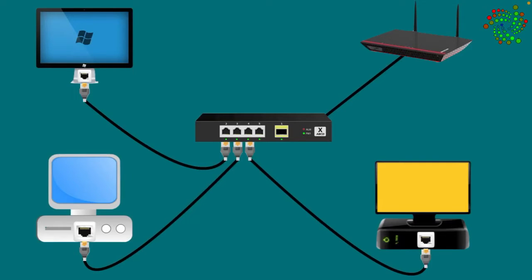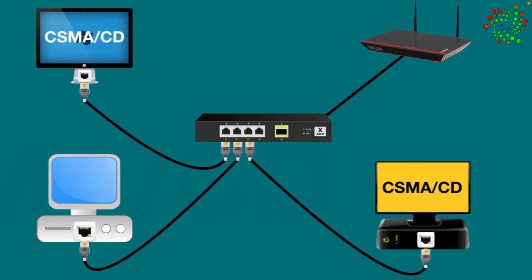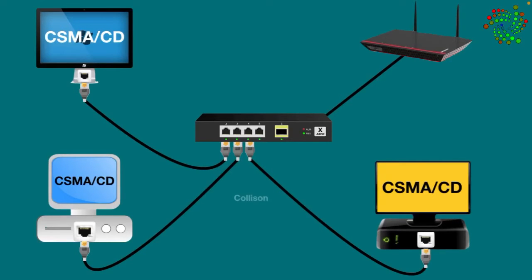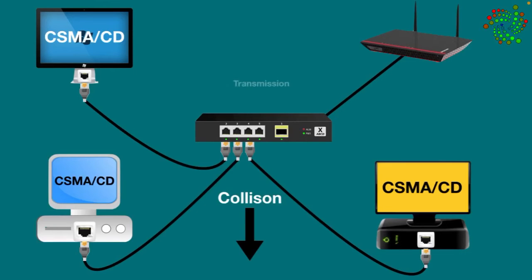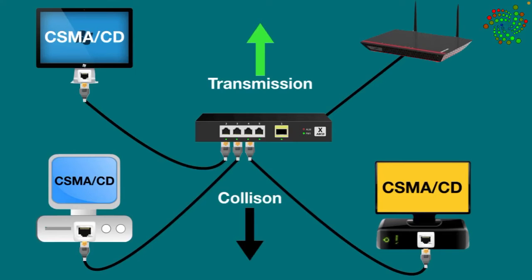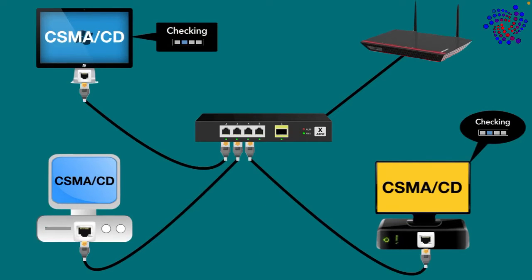Ethernet works pretty simply. When a device on the Ethernet network wants to send data to another device, it uses a standard technology called CSMA/CD — Carrier Sense Multiple Access with Collision Detection. It is used to reduce data collision and increase successful data transmission. Before transmitting data, CSMA/CD checks if there is any traffic on the network.